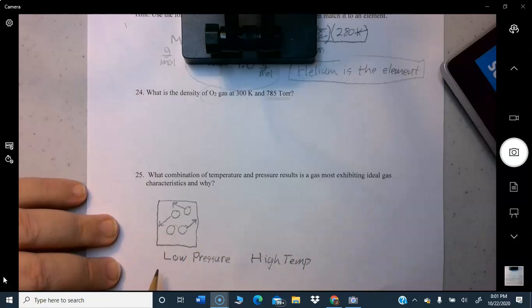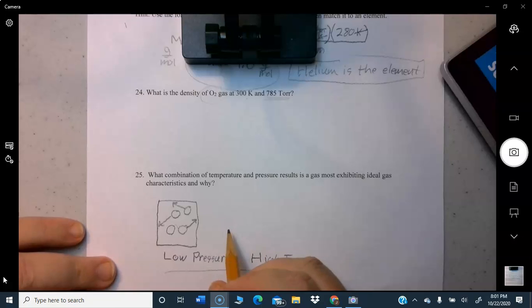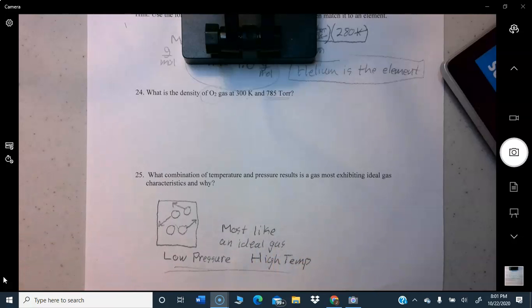The other one is high temperature. Remember that molecules have a tendency to want to stick together if they don't have much energy and kind of clump together. But if you get the temperature high, that's high kinetic energy. That will keep them from coming together. They'll have enough energy to break apart. So it's low pressure and high temperature that's going to have them acting most like an ideal gas. That was straight from the video.